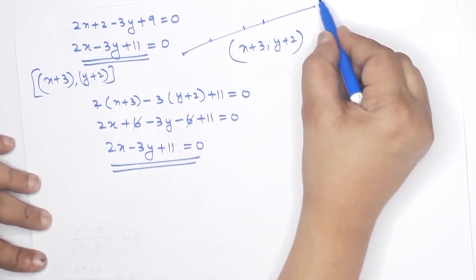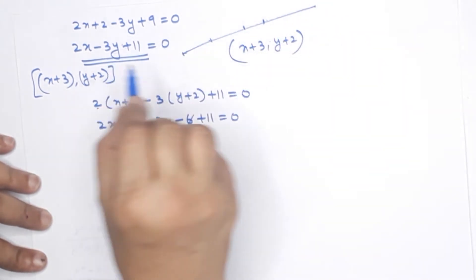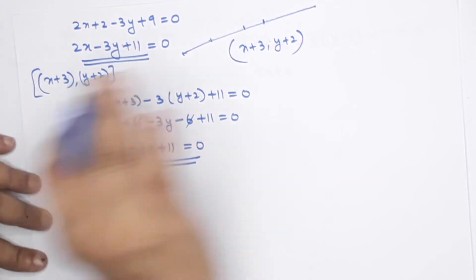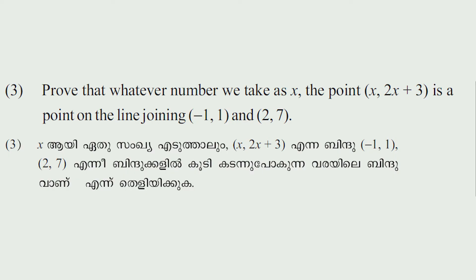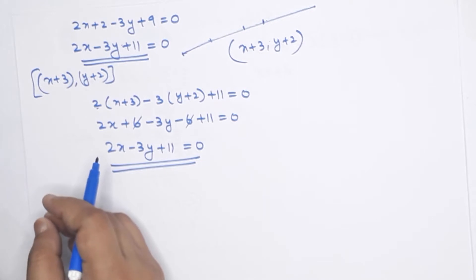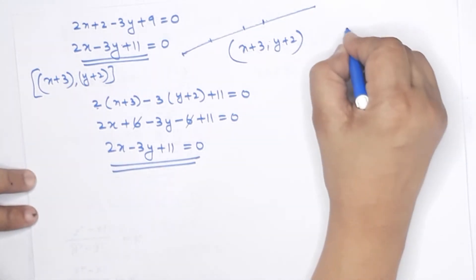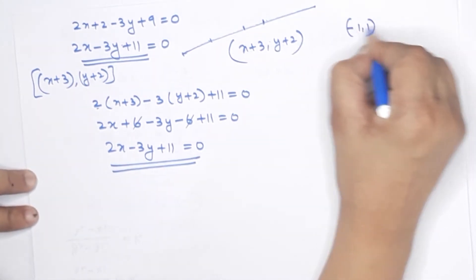That means (x+3, y+2) is a point on the line joining negative 1, 1 and 2, 7. If we add another point in this equation, we call it negative 1, 1 and 2, 7.